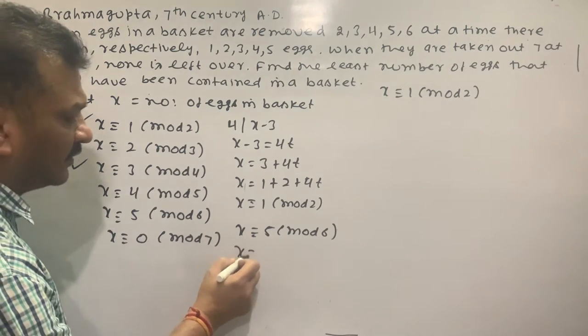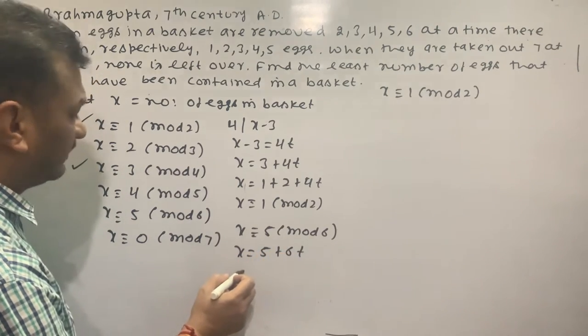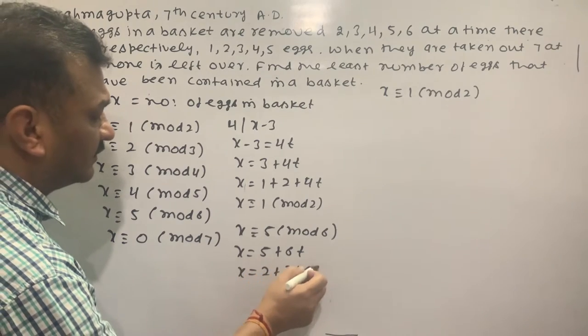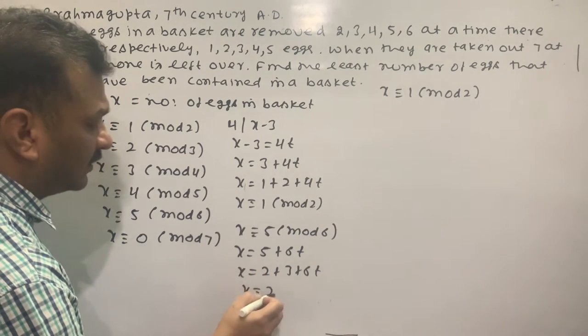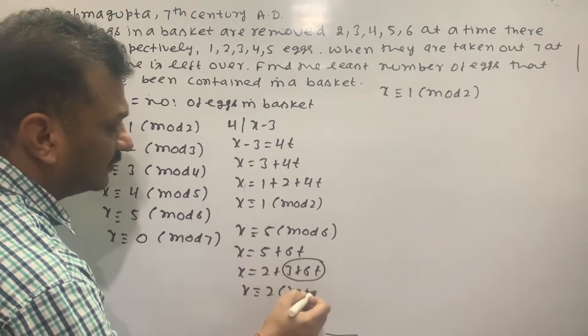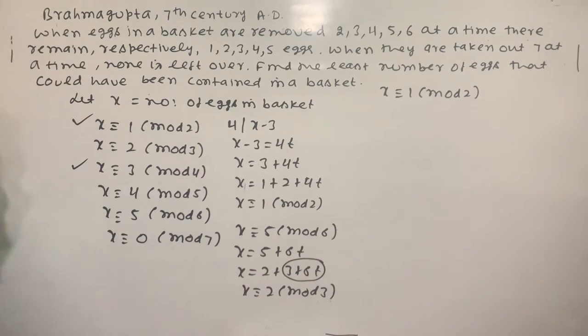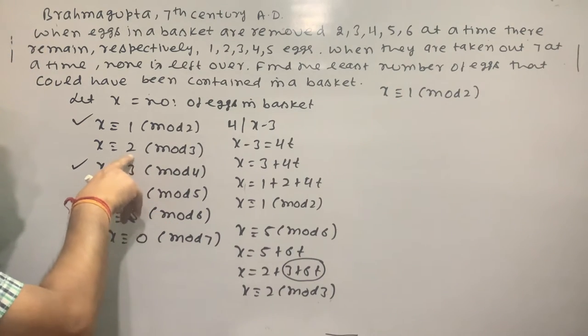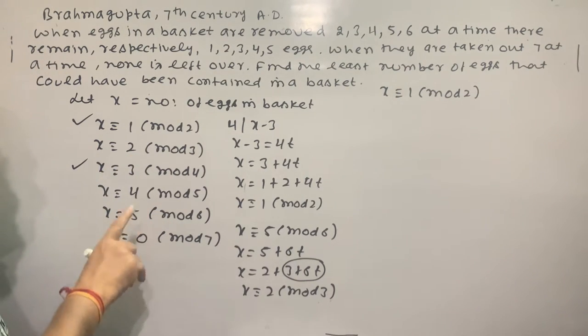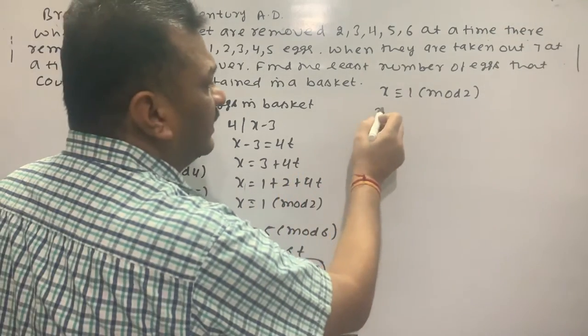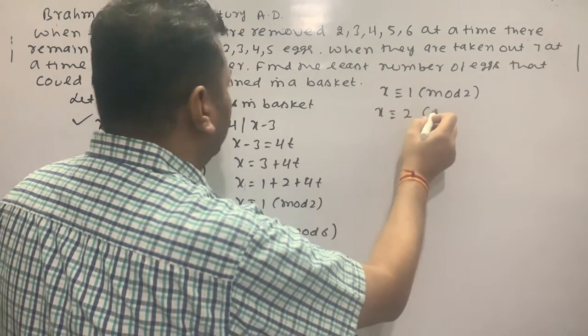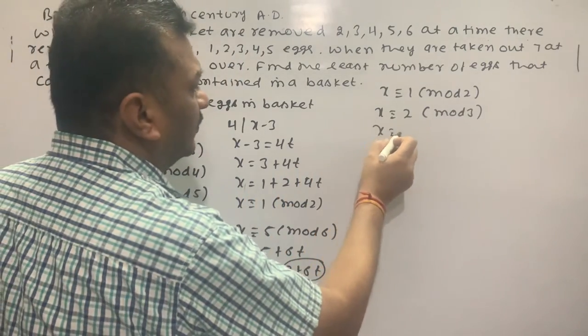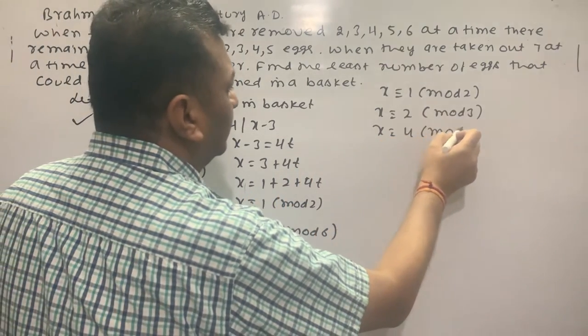x equals 5 plus 6k, which is 2 plus 3 plus 6k, so x ≡ 2 (mod 3). x ≡ 2 and x ≡ 5 becomes x ≡ 2 (mod 3), and x ≡ 0 (mod 7).